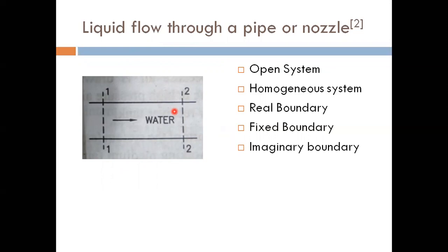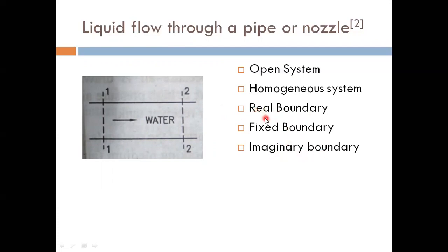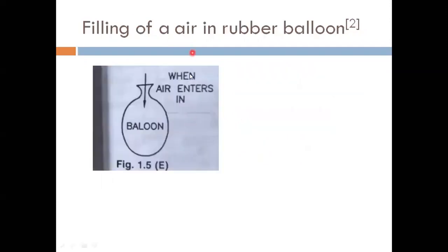Another example: liquid flowing through a pipe or nozzle. To study the flow rate, we define section 1-1 and section 2-2. This is an open system because flow crosses the boundary. It is a homogeneous system since there is only water — no multi-phase system. Part of the boundary is a real surface while sections 1-1 and 2-2 are imaginary, so the boundary is both real and imaginary.